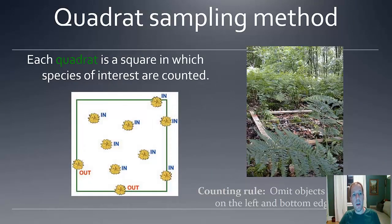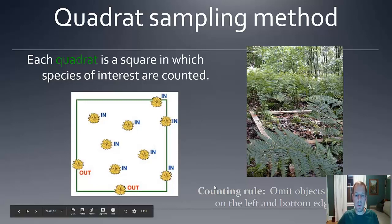The quadrat is the actual square. The grid is going to be made up of many quadrats. You're going to be counting species of interest in those particular quadrats. It's good to have a universal counting rule. There are several different ways that this can be done. One way, which I would recommend, is that you set up a physical grid, and those barriers are going to be on the exterior of the quadrat.